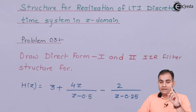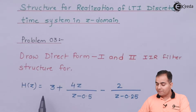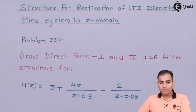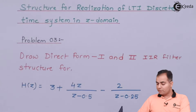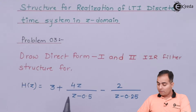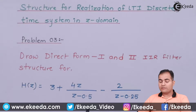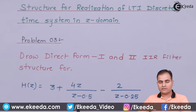In DF1 and DF2, what we want in the transfer function is a single numerator and single denominator. Here we have different parts, so we need to make a single numerator and single denominator. Just do cross multiplication to get that. Then compare all coefficients of Z, but here Z is in normal positive power — what we want is negative power of Z. So first multiply all the Z terms, then take the highest power of Z in the denominator as common.